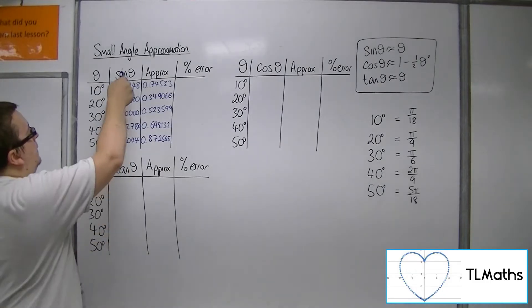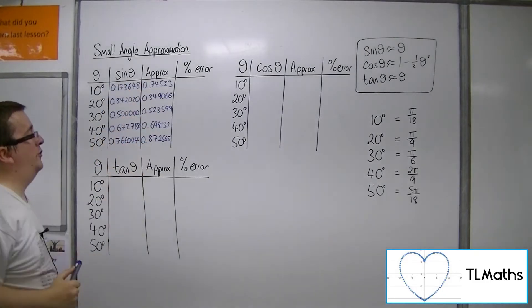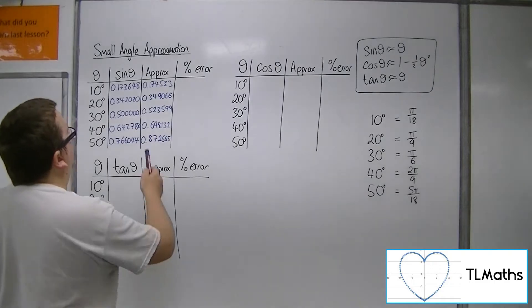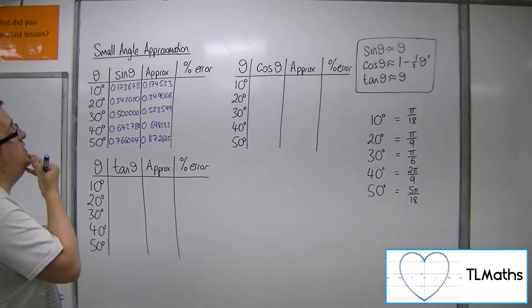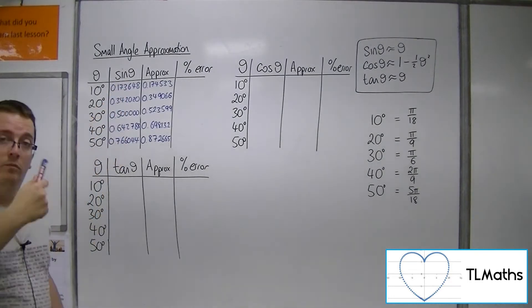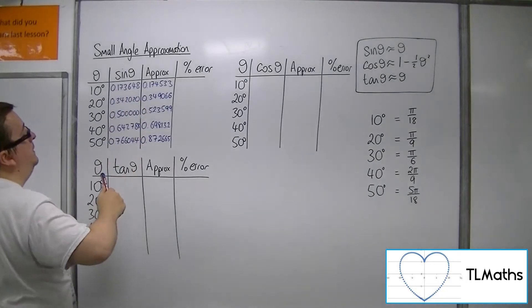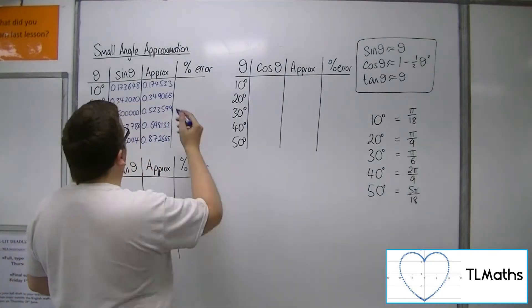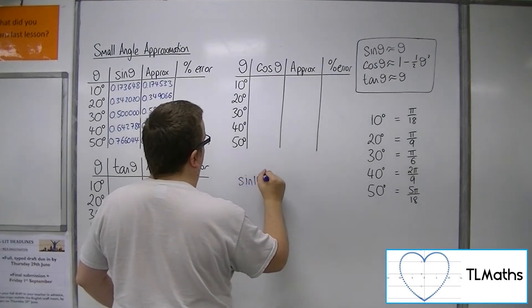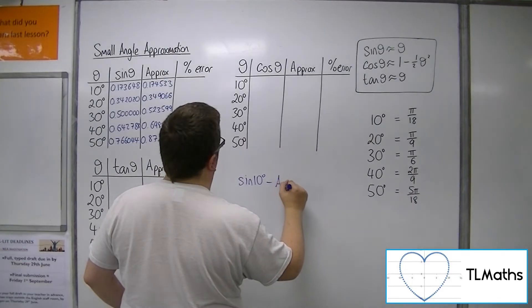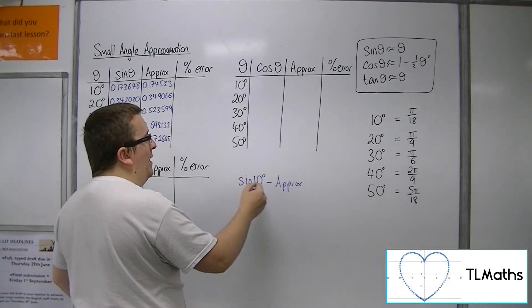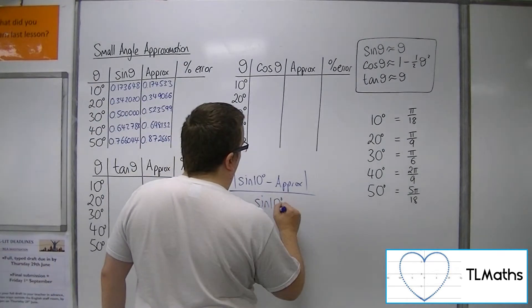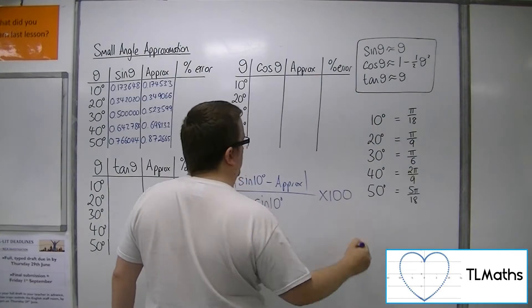So here we have now sine of the angle and the approximation using the small angle approximation. Now the percentage error can be found by subtracting one from the other, then dividing by the original, the sine, the actual value, then times by 100. For example, to get the percentage error for this first one, I would do sine of 10, take away my approximation. Now whatever that is, I'll take the positive value of it, then divide that by sine of the angle, and then times that by 100 to get the percentage.